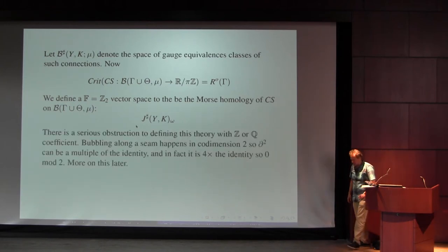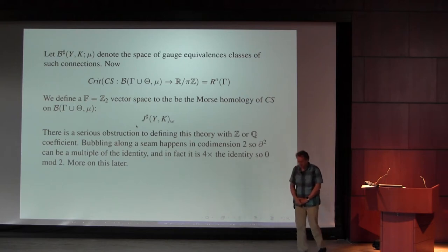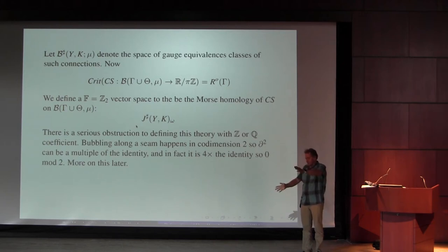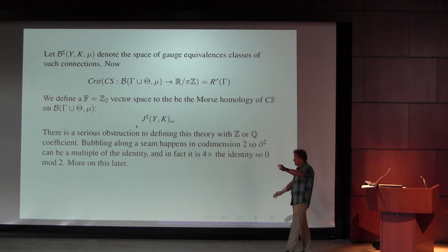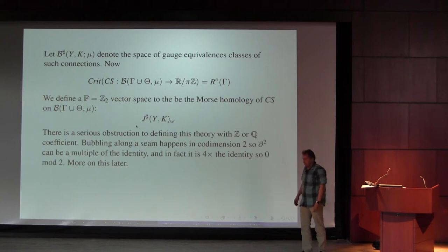Once we pass to this sharp story, there are no reducible connections that we have to worry about, so we can just do the Morse homology for the Chern-Simons function. There's one very interesting aspect — we look at critical points, look at the flow lines, and at some point we want to prove D² = 0, so we look at one-dimensional moduli spaces of critical points that have index difference two.